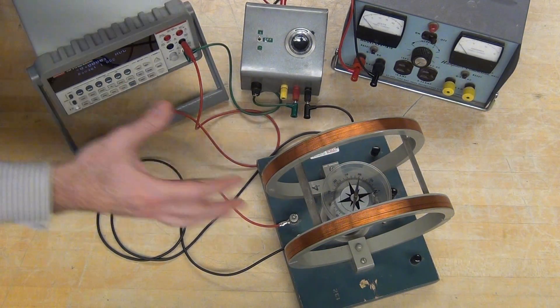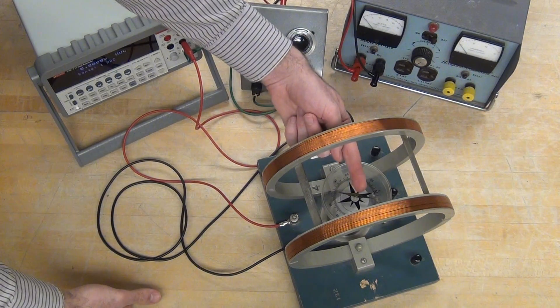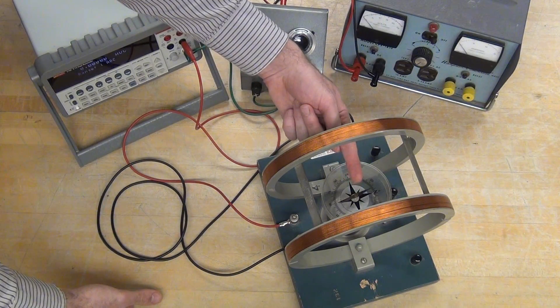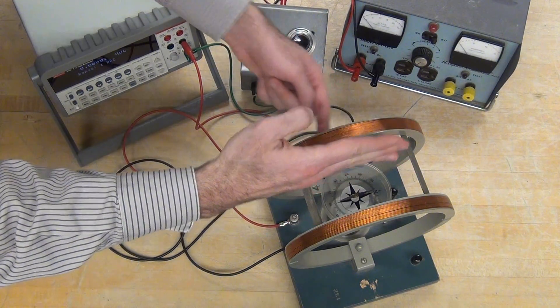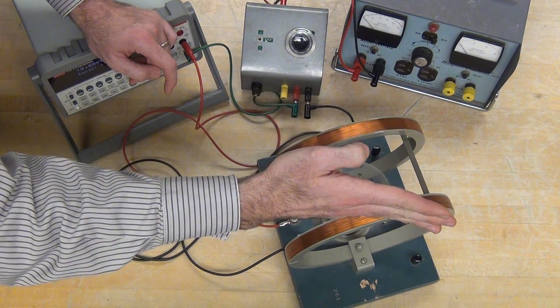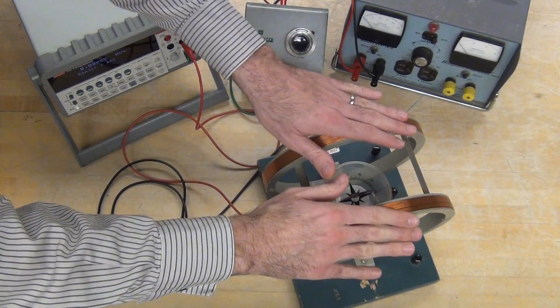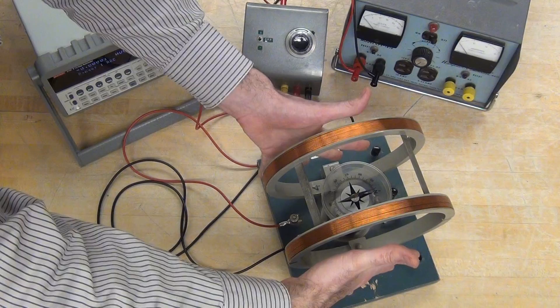Now we're using the magnetic field of the coil, which you've mapped out and shown is along that central axis, to deflect the compass needle from north. The compass needle's pointing this direction. We're going to deflect it slightly and then slightly the other way using the field of this coil.